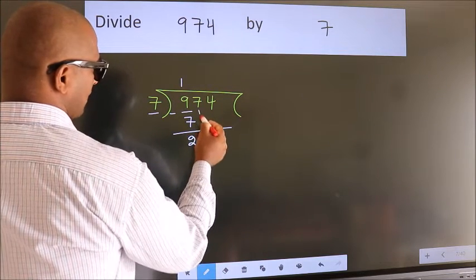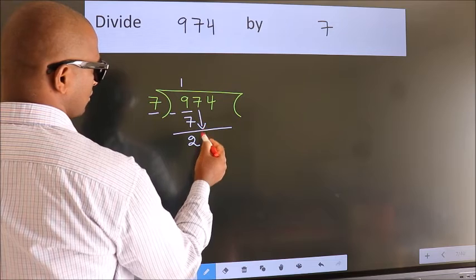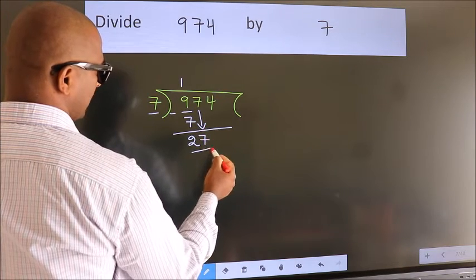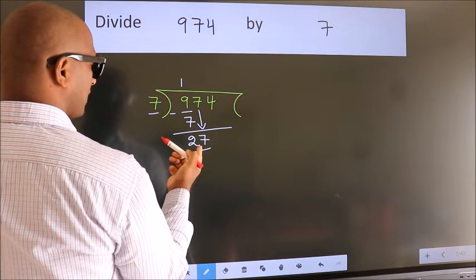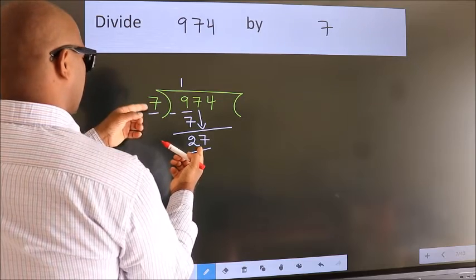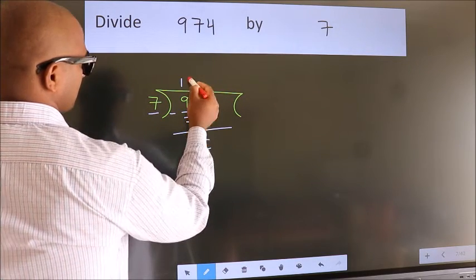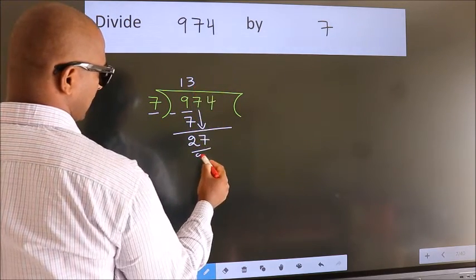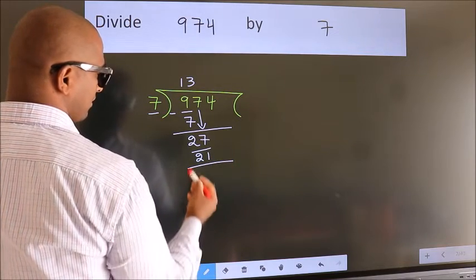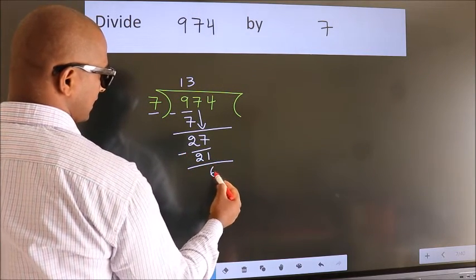After this, bring down the beside number. So, 7 down. So, 27. A number close to 27 in 7 table is 7 threes, 21. Now, we subtract. We get 6.